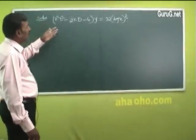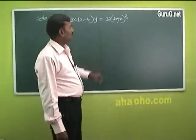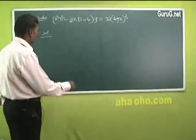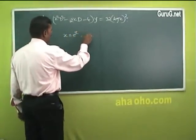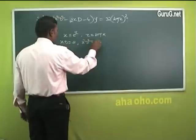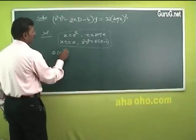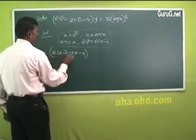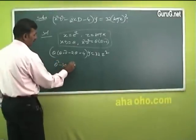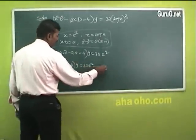Now solve x²D² - 2xD - 4y = 32(log x)². First, convert into a linear equation with constant coefficients using x = eᶻ or z = log x, with xD = θ and x²D² = θ(θ - 1). Substituting: (θ(θ - 1) - 2θ - 4)y = 32z², giving (θ² - θ - 2θ - 4)y = 32z², i.e., (θ² - 3θ - 4)y = 32z². This is equation 2.